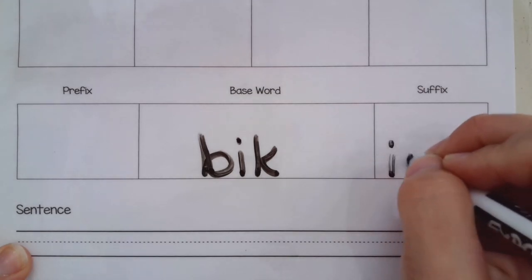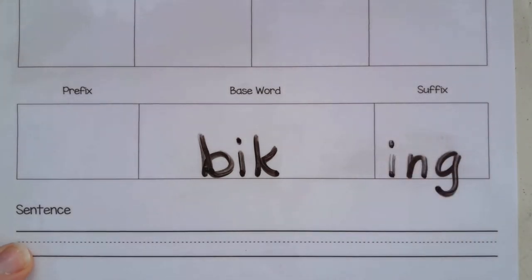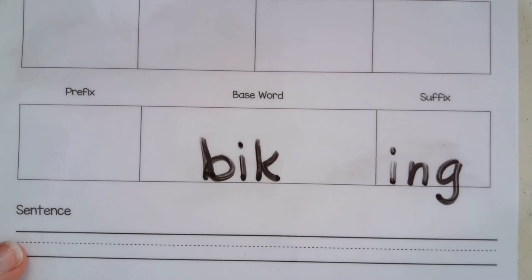Bike-ing. Biking. And that's how we can use those spelling rules and just erase or do whatever we need to change. It makes it easier for the students to identify if there needs to be a spelling rule change.